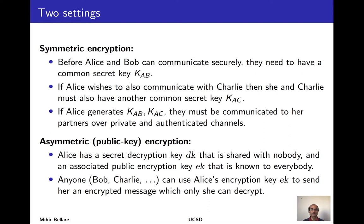In the symmetric setting, the premise was that before Alice and Bob can communicate securely they need to have obtained a common secret key. They both know it and the adversary doesn't. If Alice wishes to communicate with someone else, Charlie, she needs a new fresh key shared with Charlie, distinct from the one she shares with Bob. How these keys are communicated is left out of the symmetric encryption formalization, but they need to be communicated securely over private and authenticated channels. This key management challenge motivated people to seek the alternative of public key encryption.